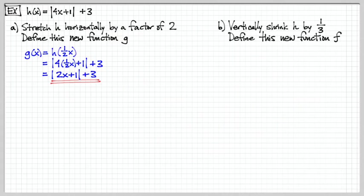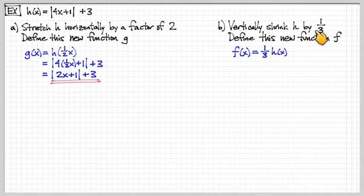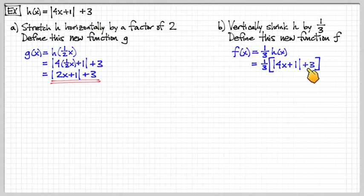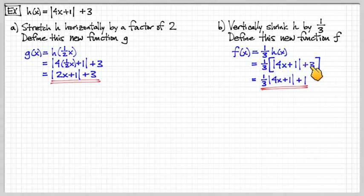Now let's look at a vertical shrink. Vertical shrinks mean we multiply the output, and in this case we multiply by one third. Replacing h of x with its definition and distributing one third across the terms gives us our simplified function that has been vertically shrunk by a factor of one third.